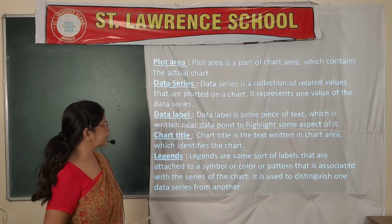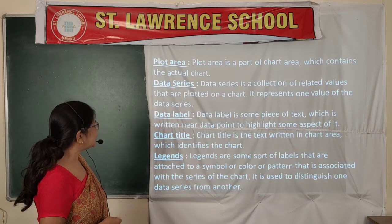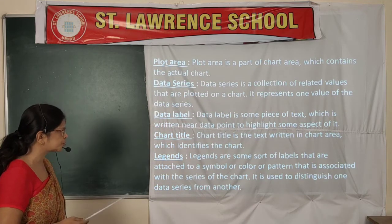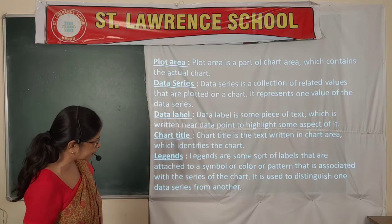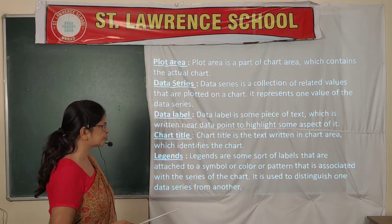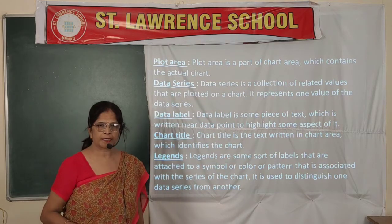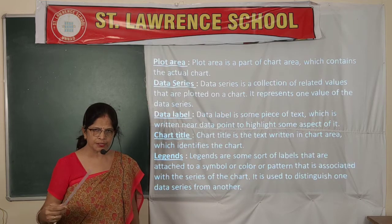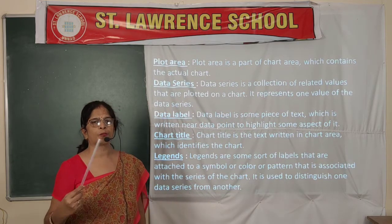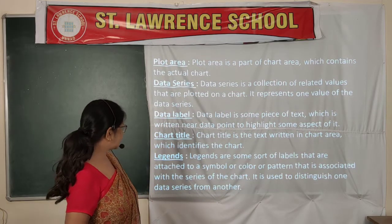The chart title represents the name of the chart. Legends are labels attached to a symbol, color, or pattern associated with the chart. Legends are used to distinguish one data series from another — they show which color or pattern represents which data series.